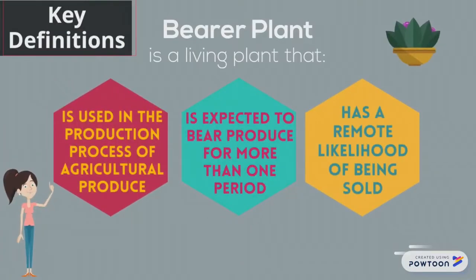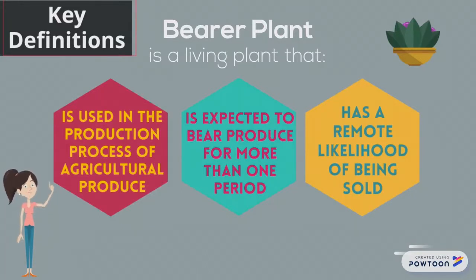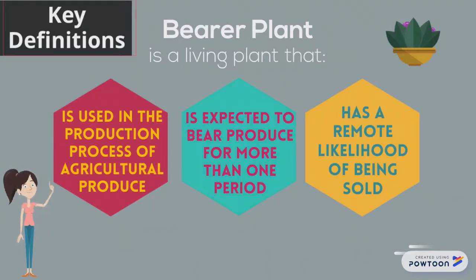A bearer plant is a living plant that is used in the production process of agricultural produce. It is expected to bear produce for more than one period, and the likelihood of it being sold as agricultural produce is remote.